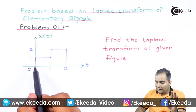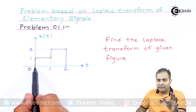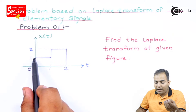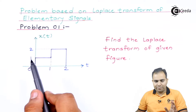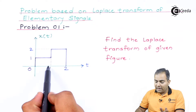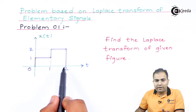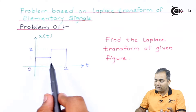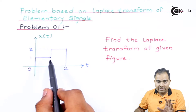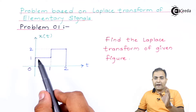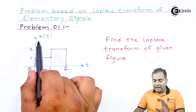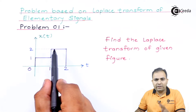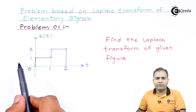In the first problem, the graph shows a constant amplitude. Starting from zero, the amplitude increases to one and remains constant from zero to one — that is the step response. Then at t=1, the amplitude increases by one again and is constant until t=2. So x(t) has amplitude one from zero to one, amplitude two from one to two, and zero elsewhere.